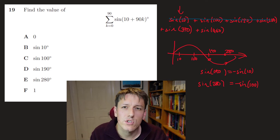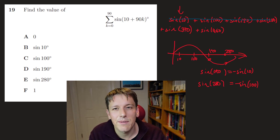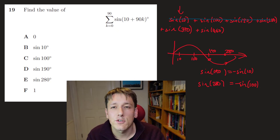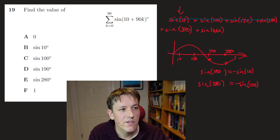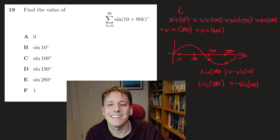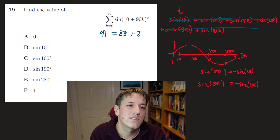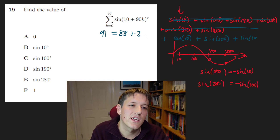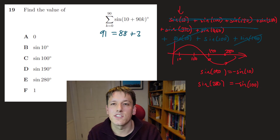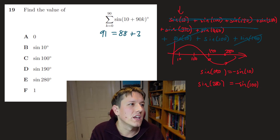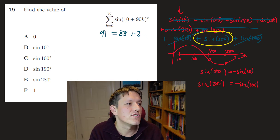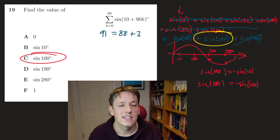The sum goes from k = 0 to k = 90, giving 91 terms. That's 22 complete groups of 4 (= 88 terms) plus 3 remaining terms: sin(10°), sin(100°), and sin(190°). The first and third cancel since sin(190°) = −sin(10°), leaving just sin(100°). The answer is C.